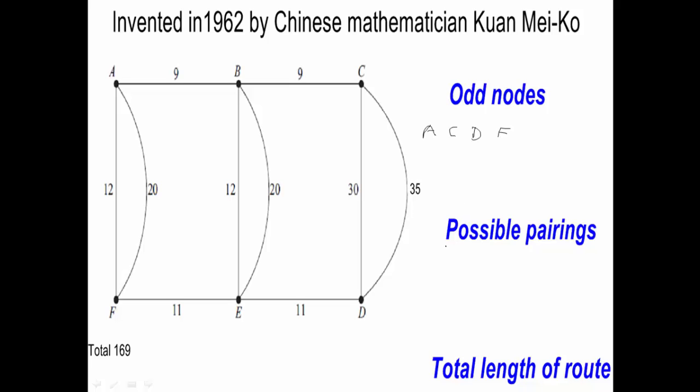We then pair up the odd nodes any way that works. So with 4, we've got A to C, in which case we would have to pair up D and F. We've got A to D, in which case we would pair up maybe C and F, and A to F, and we would have to then pair up C and D. And those are actually the only three ways that we can pair up.